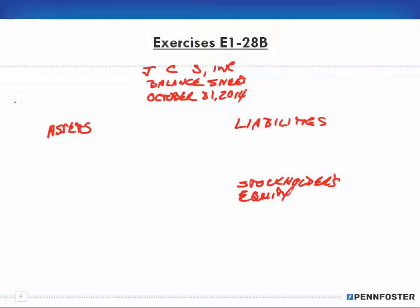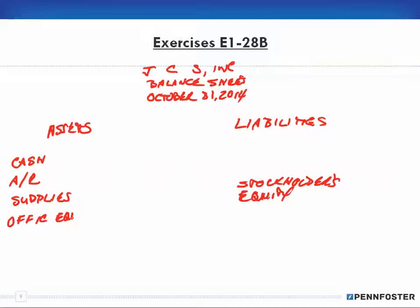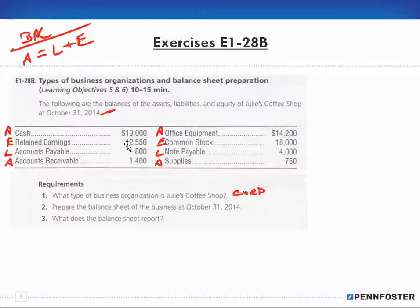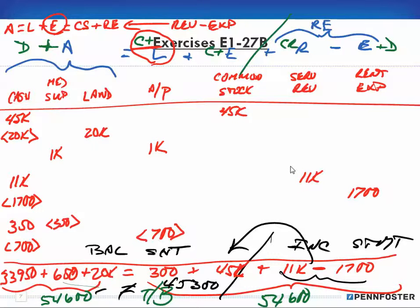Under assets, we list: cash, accounts receivable, supplies, and office equipment. This is a foundation — there are other ways to create this, but we're keeping it simple. Looking back at the data: cash is $19,000; accounts receivable is $1,400; office equipment is $14,200; and supplies is $750. Normally you would write out the full account names — I'm only abbreviating here.